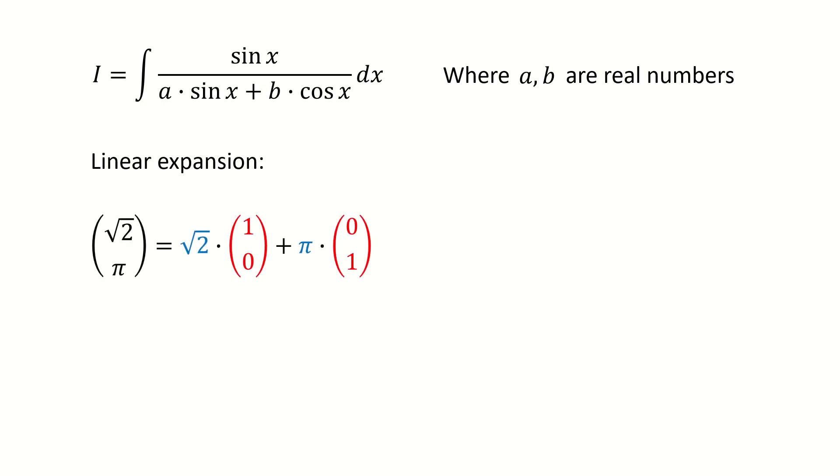So first, let's see an example. On the left-hand side, we have a simple two-dimensional vector. This vector can be written in this way. And here, 1, 0 and 0, 1 are bases. Square root 2 and pi are expansion coefficients.